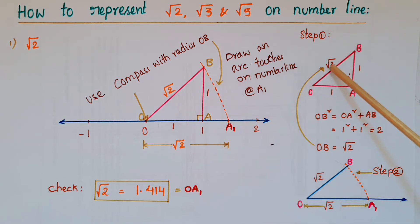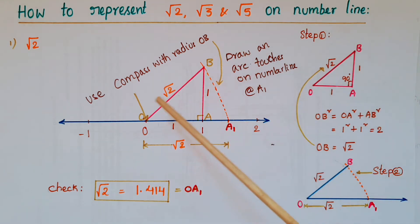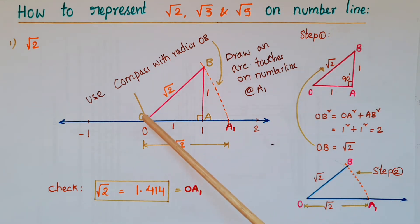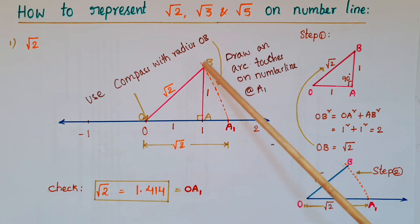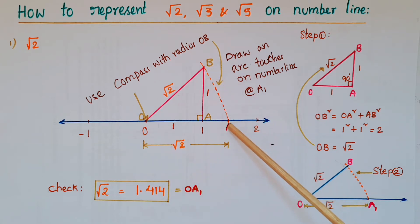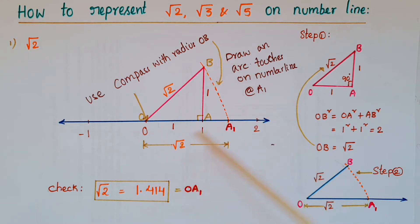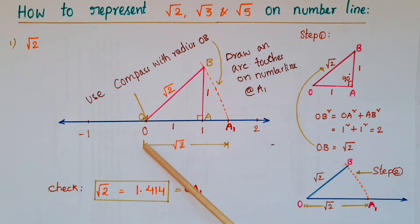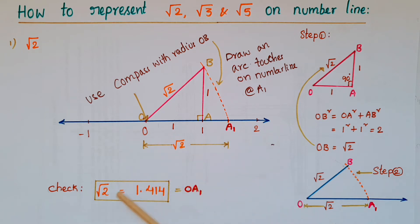We have calculated that OB is root 2. Using a compass with center O and radius OB, draw an arc that intersects the number line at A1. So OA1 equals root 2. We can verify this with a scale — root 2 is approximately 1.414.